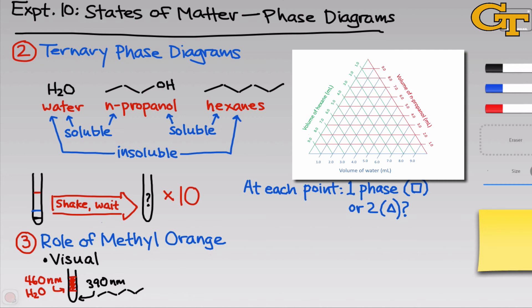Methyl orange will distribute itself between both components, the hexane-rich and the water-rich components of a two-phase mixture, but it's only colored in the water-rich phase, which is great for us because it allows us to visually distinguish the two phases. But this interesting property of methyl orange, the fact that its wavelength of maximum absorbance, or lambda max, depends on the solvent used, brings up an interesting question. Is there a relationship between the color of the methyl orange, which really boils down to its lambda max, and the polarity of the solvent system around it, the polarity of the phase that it's in?